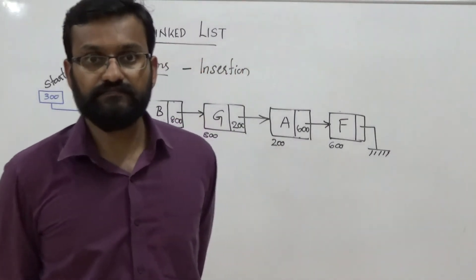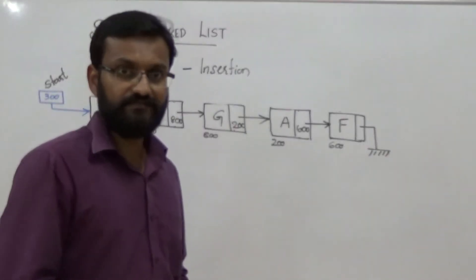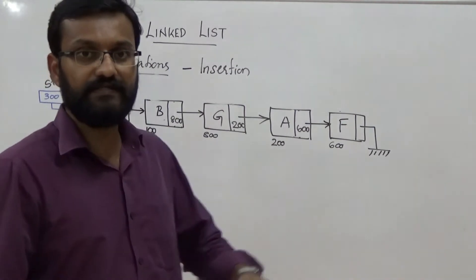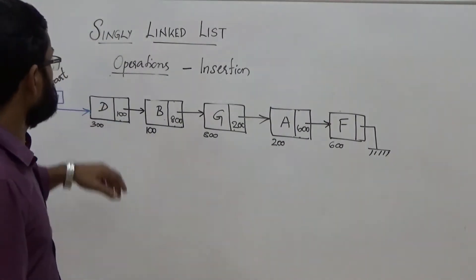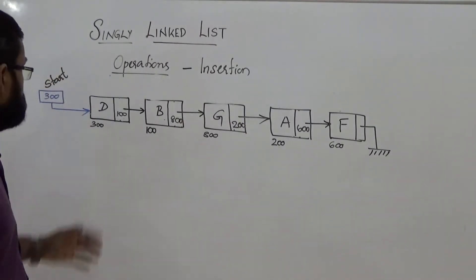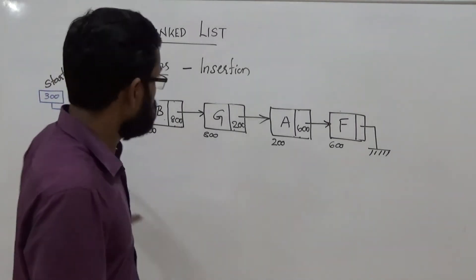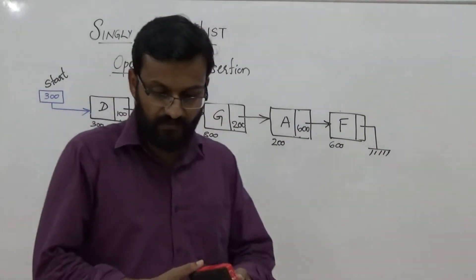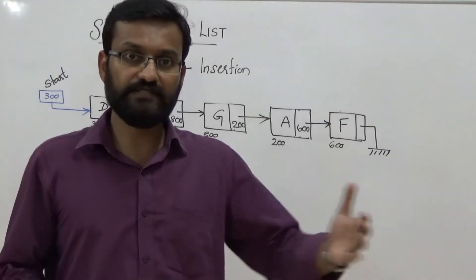This session deals with insertion operation — how to perform insertion of a new node in an existing linked list. We proceed based on the assumption that we have a non-empty linked list with minimum one node. We can perform insertion at the beginning as the first node, at the end as the last node, or in between any two nodes. Based on this, there are three categories of insertion.